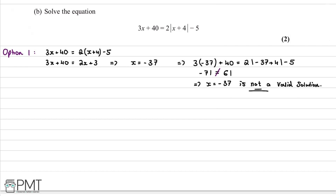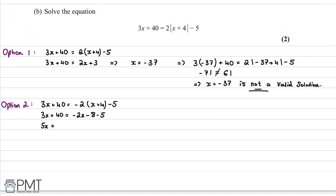We now look at option 2: the case where 3x + 40 = -2(x+4) - 5. Tidying this up, the right-hand side becomes -2x - 8 - 5 = -2x - 13. Adding 2x to both sides gives 5x = -13 - 40 = -53.